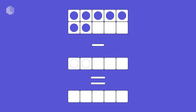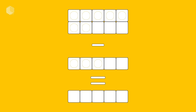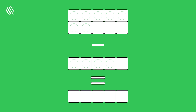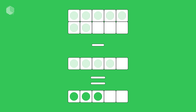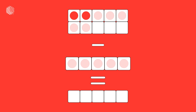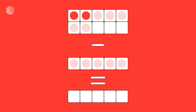7 minus 2 equals 5. 7 minus 3 equals 4. 7 minus 4 equals 3. 7 minus 5 equals 2.